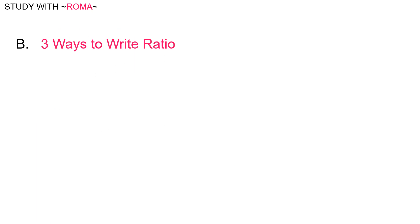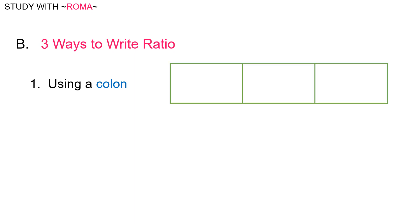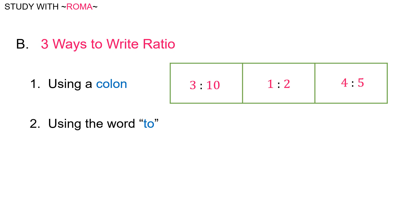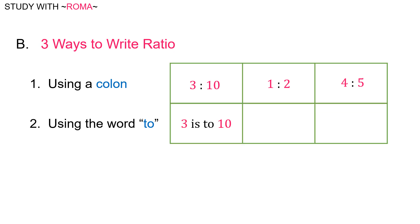There are three ways to write ratio. First, using a colon: three is to ten, one is to two, four is to five. Second, using the word 'to': three is to ten, one is to two, four is to five.